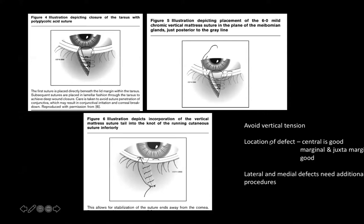Always avoid vertical tension, as it can reduce vertical height and cause ectropion. For midline defects, primary closure is quite easy. Marginal and juxta-marginal defects are also good for primary closure. For lateral or medial defects, additional procedures are required because the lid doesn't approximate well in those circumstances.